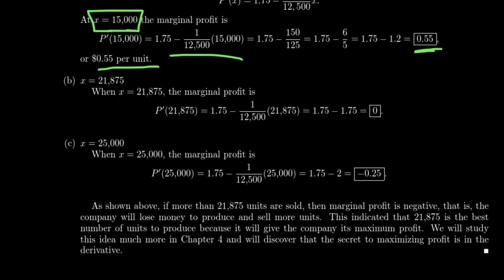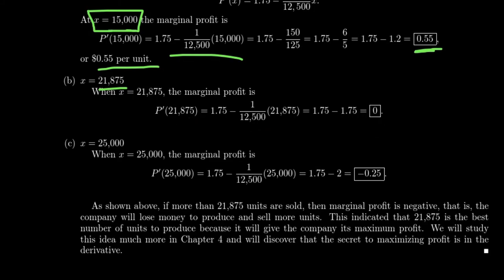To further interpret this: at production level 21,875, plugging into the marginal profit function gives zero — we're neither gaining nor losing profit at that point. And at 25,000, the marginal profit is negative 0.25 — we're actually losing profit. The reason is that at that level of production, costs exceed revenue; it's cost-prohibitive to produce that many units. Even though everything is being sold, the cost of selling it is more than the revenue generated, resulting in a negative marginal profit.